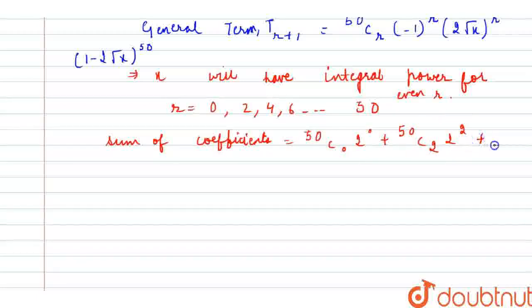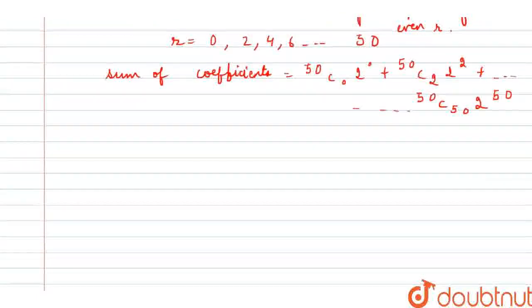I am writing for the even integrals, 2^2 plus so on and this proceeds up to 50C50·2^50. I am just writing down the sum of the coefficients for the even power of r.